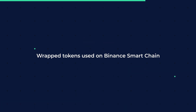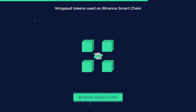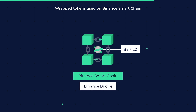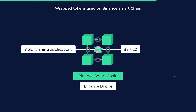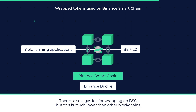Another network where wrapped tokens are used is the Binance Smart Chain. Just like those on Ethereum, you can use whichever wrapped token you want on Binance Smart Chain in the form of BEP20 tokens. The Binance Bridge helps you with wrapping and unwrapping the tokens. You can use them in different yield farming applications or trade them as you want. There is also a gas fee for wrapping on BSC, but it is much lower than on other blockchains.